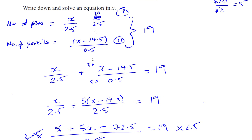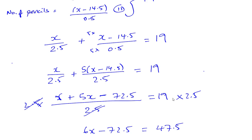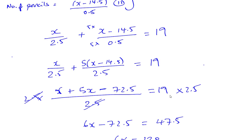So there we have our answer to this question. You have to try to find a way to link the pieces of information together into an equation. The link is: the total number of pens and pencils is 19. You find how many pens from the total cost divided by the cost each, same with pencils, add those together and set equal to 19. That gives you an equation which you solve using what we know about algebraic fractions.